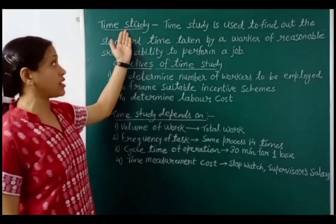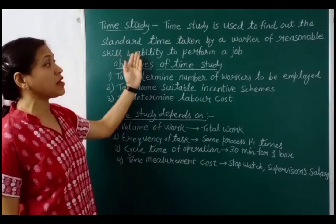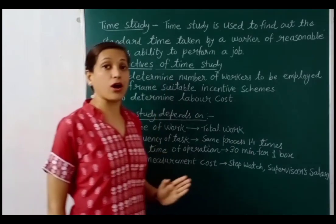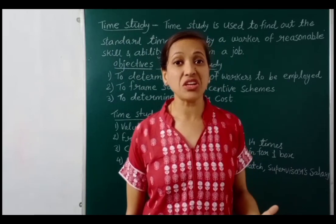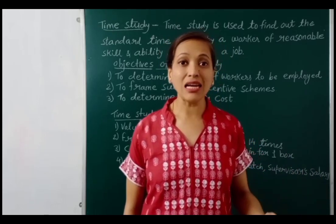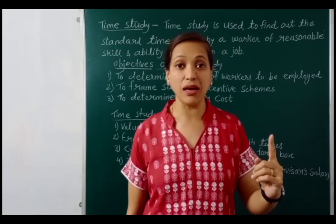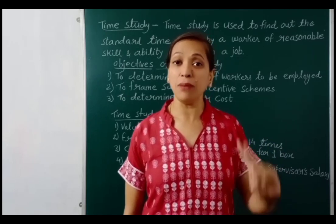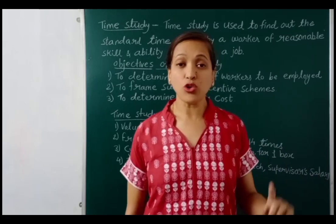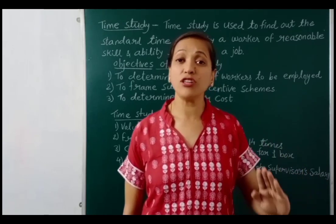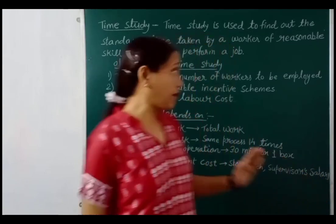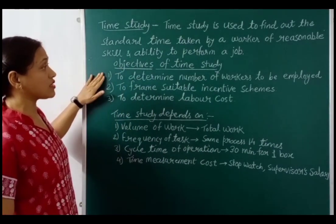Time study is used to find out the standard time taken by a worker of reasonable skill and ability to perform a job. A stopwatch is used. For example, in a factory, one worker takes 30 minutes to pack one box, so two boxes per hour. With 8 working hours minus 1 hour rest, that is 7 working hours, producing 14 boxes. Time study thus determines the standard output.